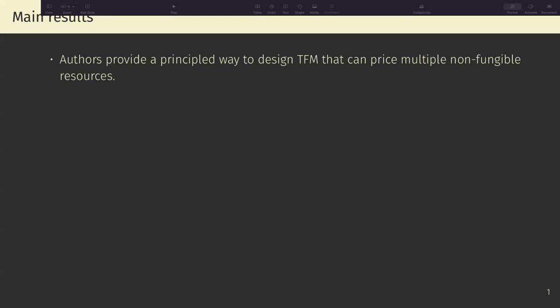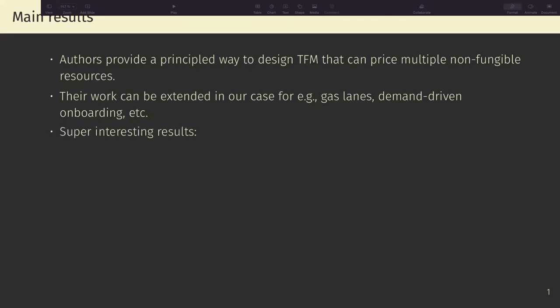So what do they do? The authors here provide a principled way to design a transaction fee mechanism that comprises multiple non-fungible resources. They can charge gas for a transaction if it's very CPU heavy and charge a different amount of gas for a transaction or a message if it's very memory intensive. This is very similar to what we're doing related to gas lanes, or for the demand-driven onboarding idea that Arnorth was proposing. So there's a lot of relation to what we're looking at.